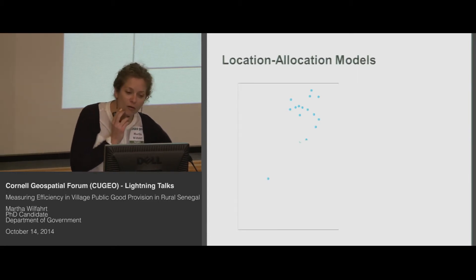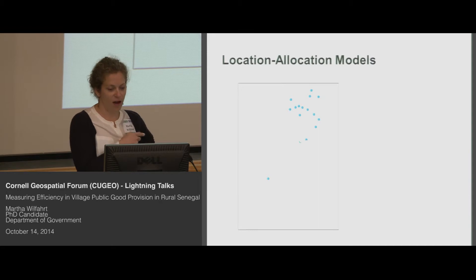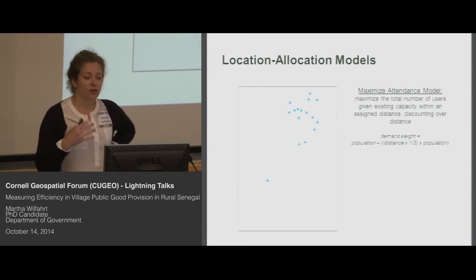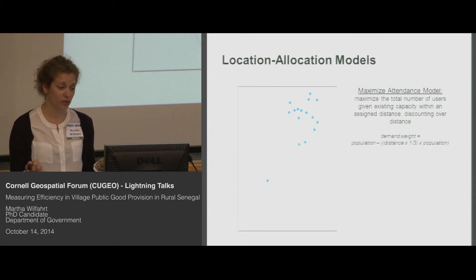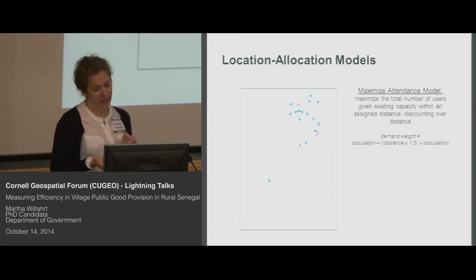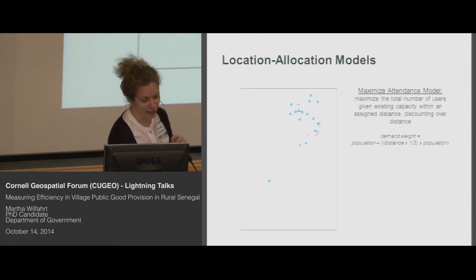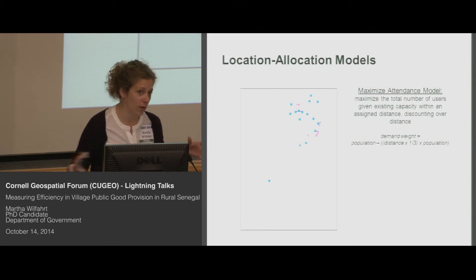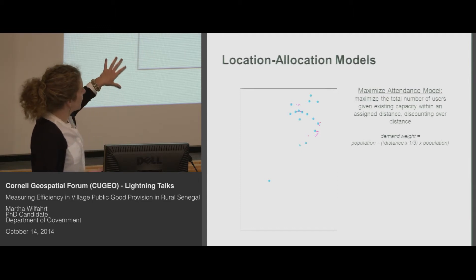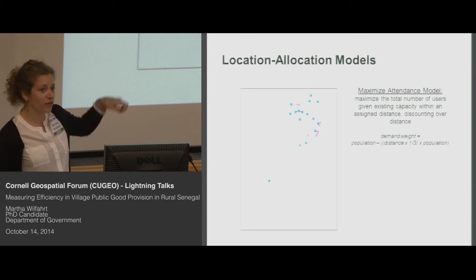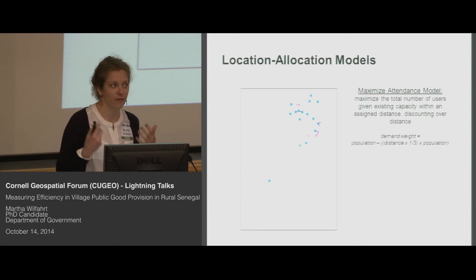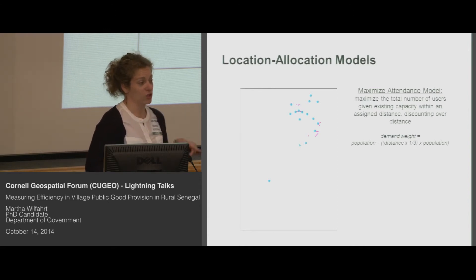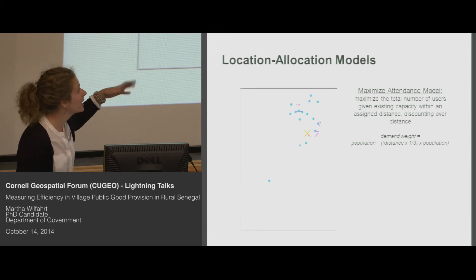Here I'm going to use the example of Arelao, which is in the northeast of the country. Once again, we have villages, we have routes between villages, and blue points are existing schools. I'm first going to look at maximizing attendance models. The idea here is that we want to maximize the total number of users who can access a school. So I population-weight all of the villages and look at a distance of three kilometers, which is the Senegalese state standard of how close they want all citizens to be to a primary school. This takes into account the existing capacity of schools in villages, so villages that already have a school can be assigned a new school if the population is largely sufficient. It then gives a prediction about the best place to build a school assuming they want to build one school, and it suggests that the village of Ida should get a school.